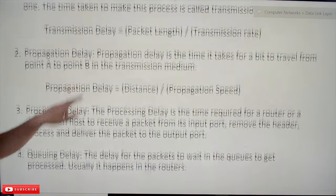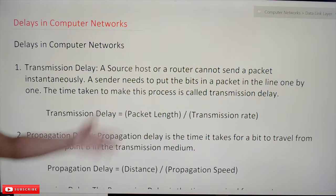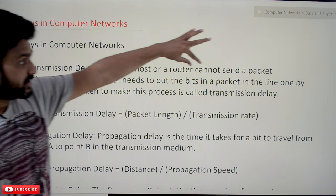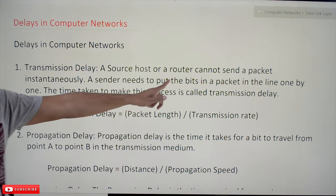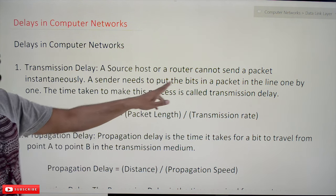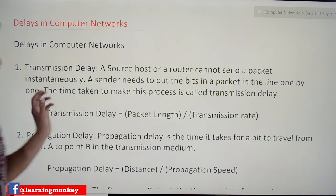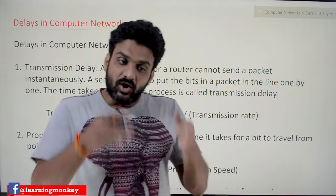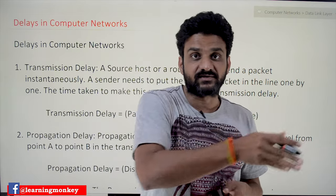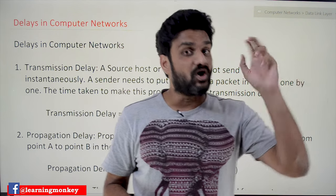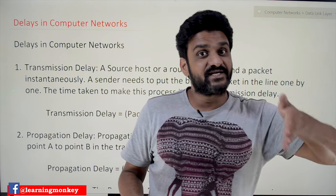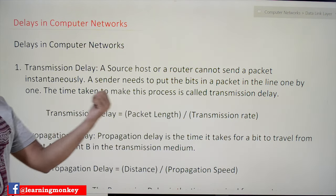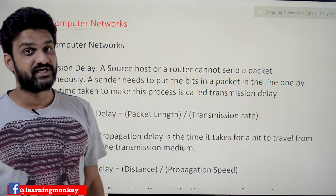The first one is transmission delay. What is meant by transmission delay? A source host or a router cannot send a packet instantaneously. A sender or router needs to put its bits in a packet one by one. For example, if the packet has a thousand bits, all those bits are to be arranged one after the other. The time taken for the source or router to arrange all those bits in sequence is what we call transmission delay.